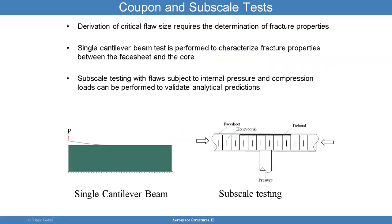For coupon and sub-scale testing, you can use the single cantilever beam test. The derivation of critical flaw size requires the determination of fracture properties through such a test. The single cantilever beam test has become one of the top tests for doing this, and there is an ASTM standard on the development of that test. Sub-scale testing with flaws subjected to pressure and combined loads can be used to validate the analytical models and guide the design process.